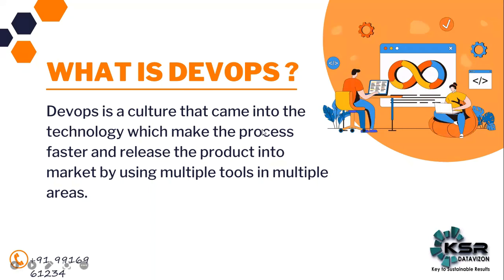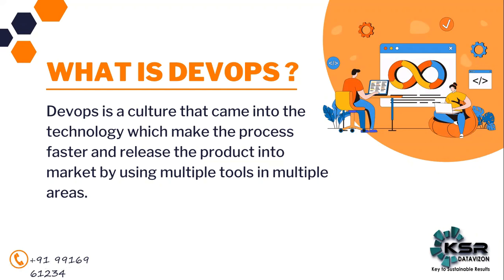The Operations team would be in a waiting period until the Dev team completed fixes, and then the process would go back and forth. Because of this back-and-forth, the process was getting slower and the product was being released later. That is when DevOps came into the picture, making the process faster by using multiple tools and involving multiple things in between the process.